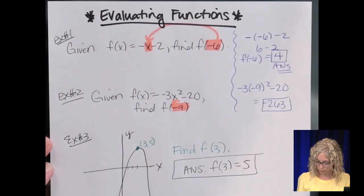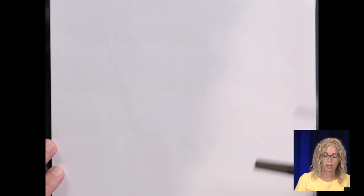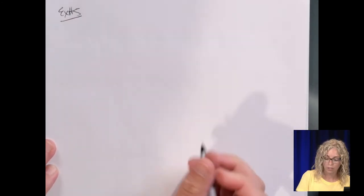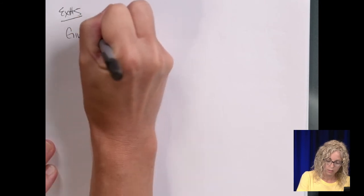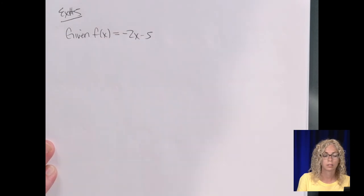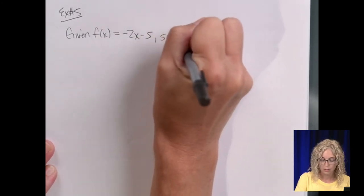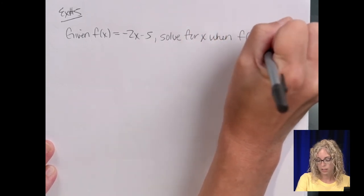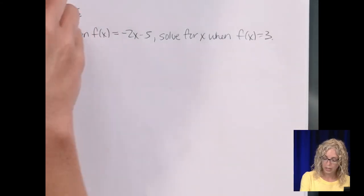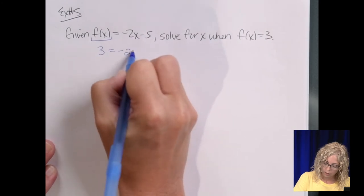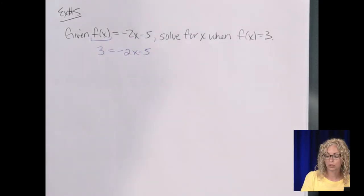All right, next section. This is example number 5, even though I kind of combined the last two. Given f of x equals negative 2x minus 5, so it's linear. Solve for x when the f of x equals 3. So we're going to replace this whole f of x here with the number 3. So let's copy down the rest. And now you can see we only have one variable to then solve for y.